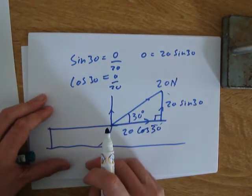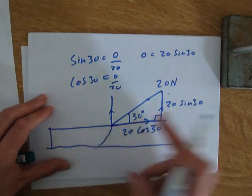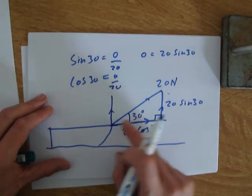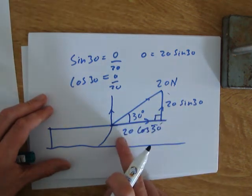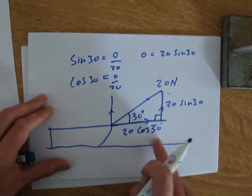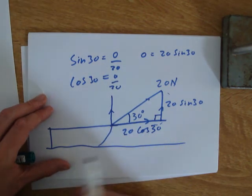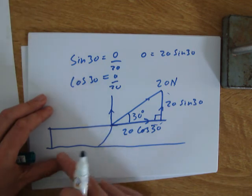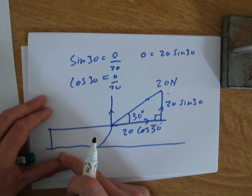We now know, if we wanted to know how much force was pulling the sledge up, how likely the sledge is to lift off the ground, we can use that force. If we wanted to calculate the work done dragging the sledge or find out how much force was moving the sledge forward, we would use that force.